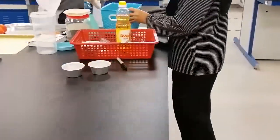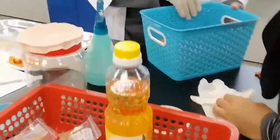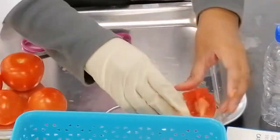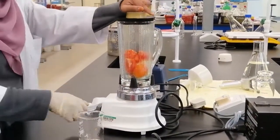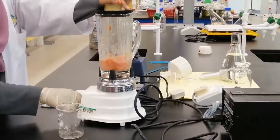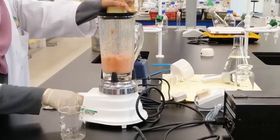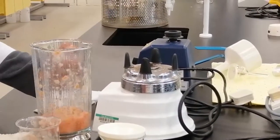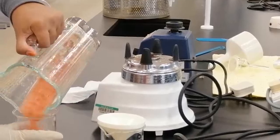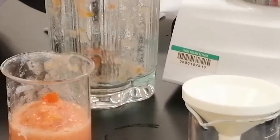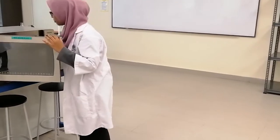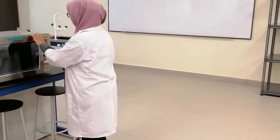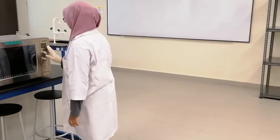After the harvesting process, the tomato is cut and smashed using a blender to extract the juice from the tomato. After several processes, we step into the final procedure where the juice needs to be pasteurized to ensure its quality by using microwave.